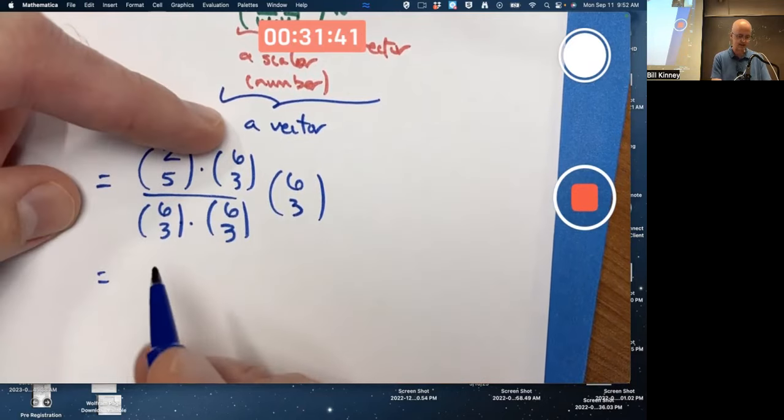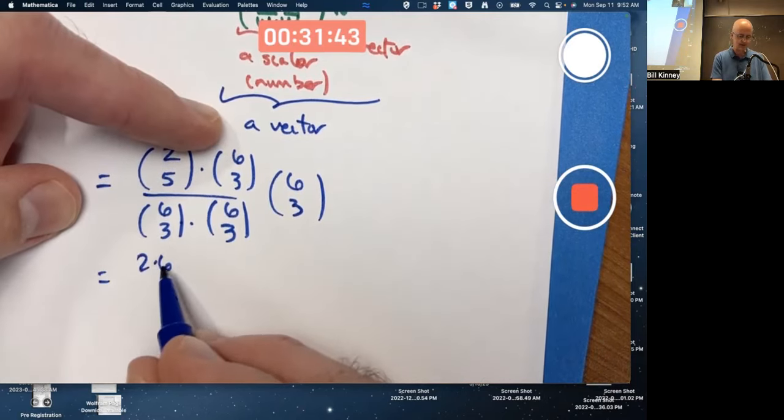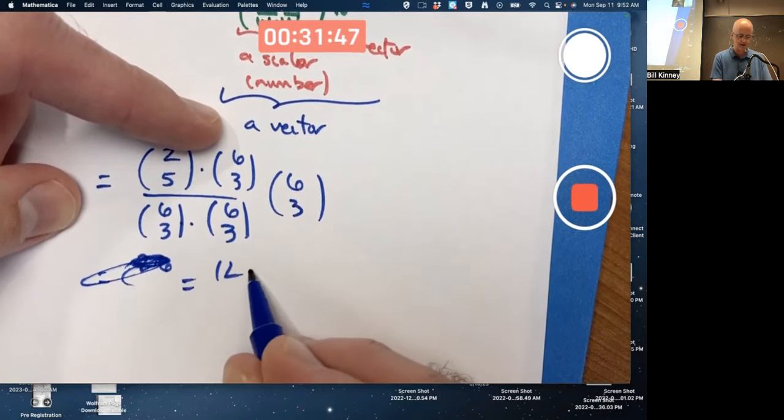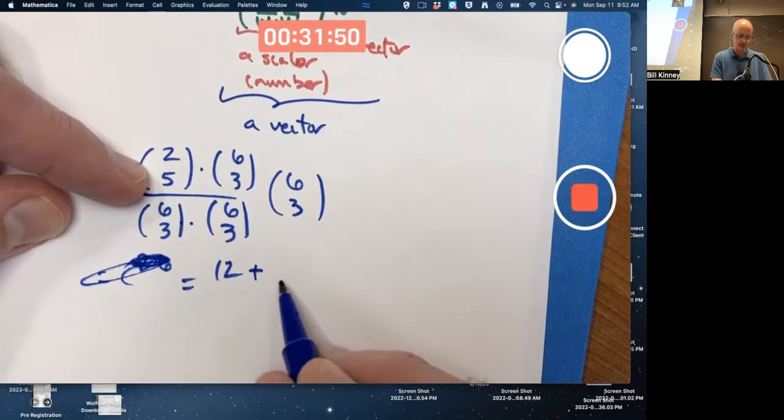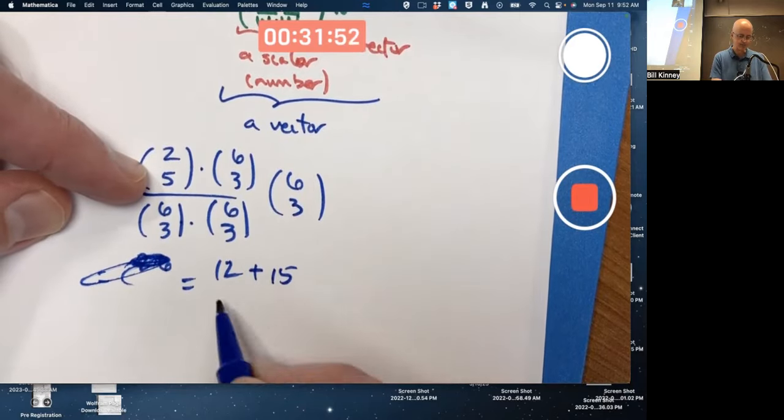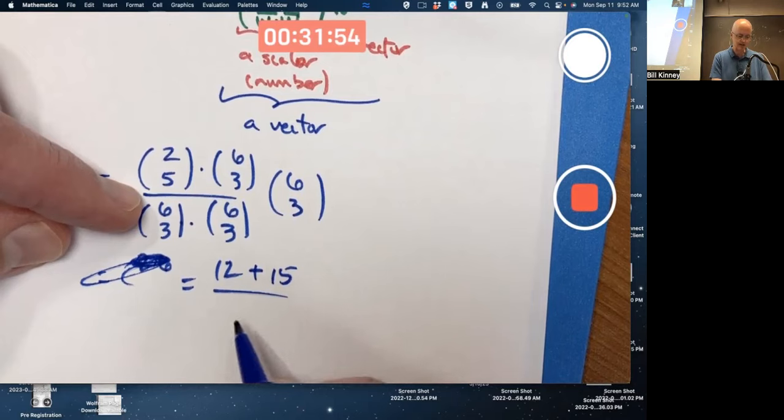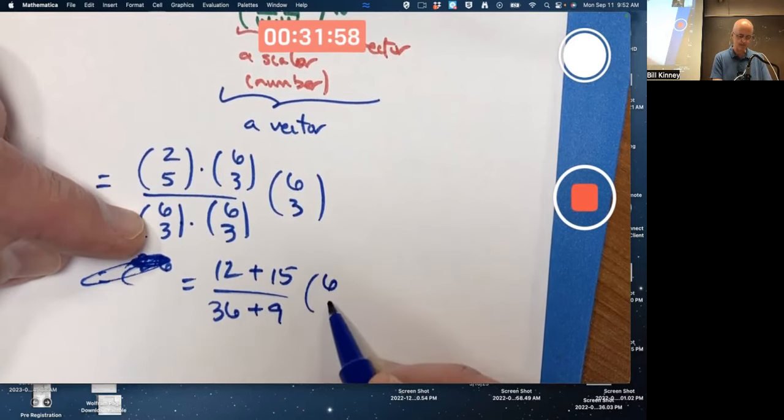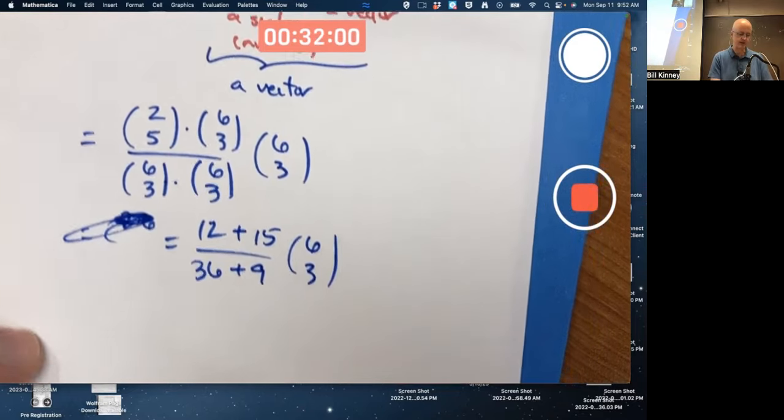You do 2 times 6. Let's just write that as 12. Plus 5 times 3. On the bottom, you do 6 times 6. Plus 3 times 3. Don't forget to multiply by the vector 6, 3.